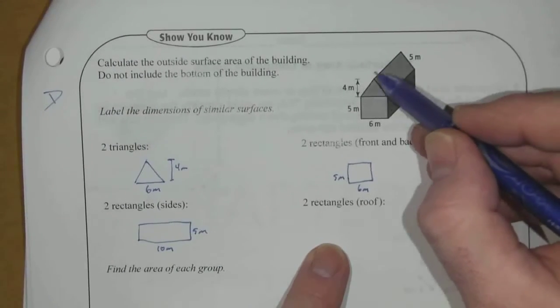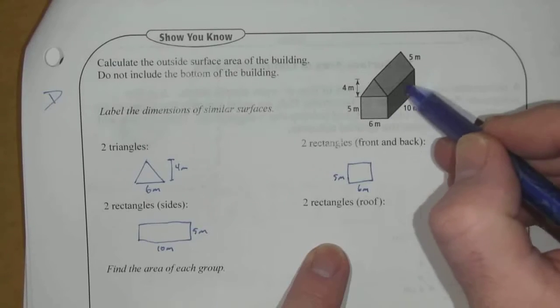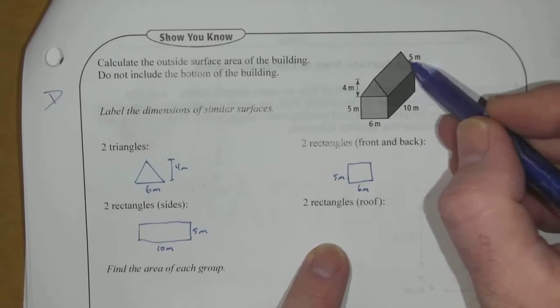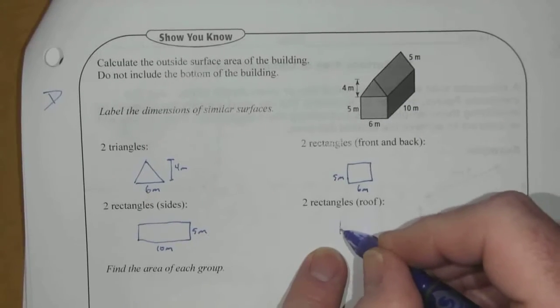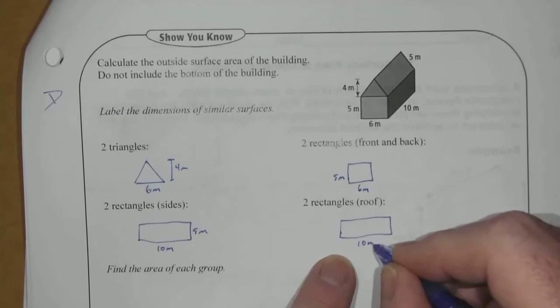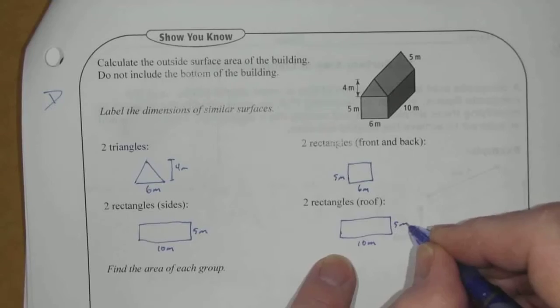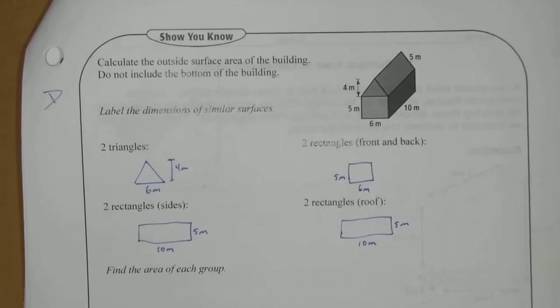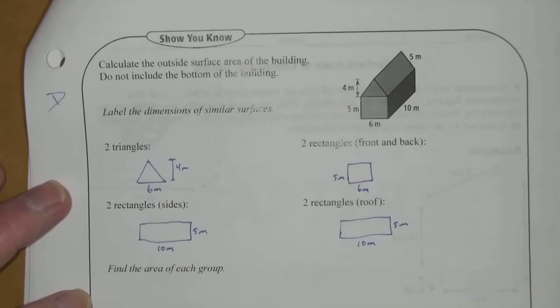And then we have two rectangles on the roof that are again 10 meters long and, as it turns out, 5 meters high. So the same dimensions as the previous rectangle here. Find the area of each group.